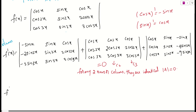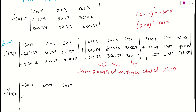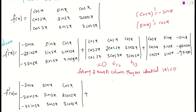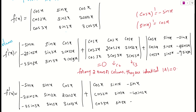So finally, f'(x) equals: the determinant of [−sin x, sin x, cos x; −2·sin 2x, sin 2x, 2·cos 2x; −3·sin 3x, sin 3x, 3·cos 3x] plus 0 plus the determinant of [cos x, sin x, −sin x; cos 2x, sin 2x, −4·sin 2x; cos 3x, sin 3x, −9·sin 3x].